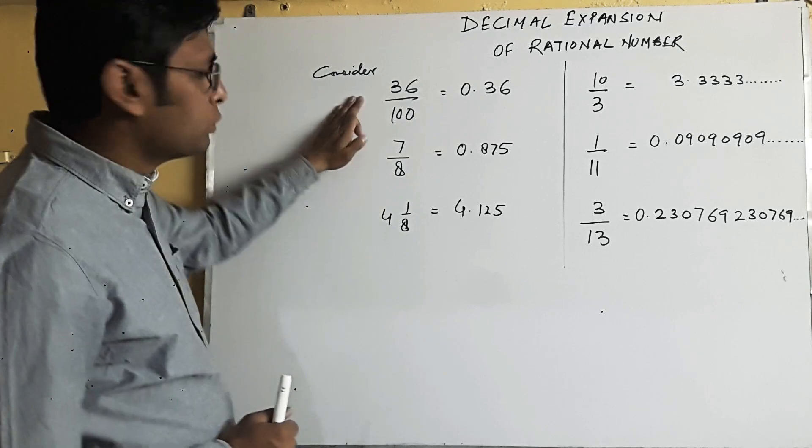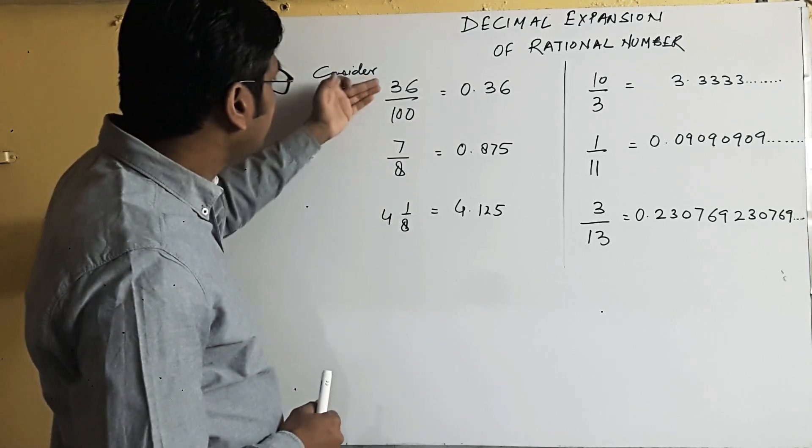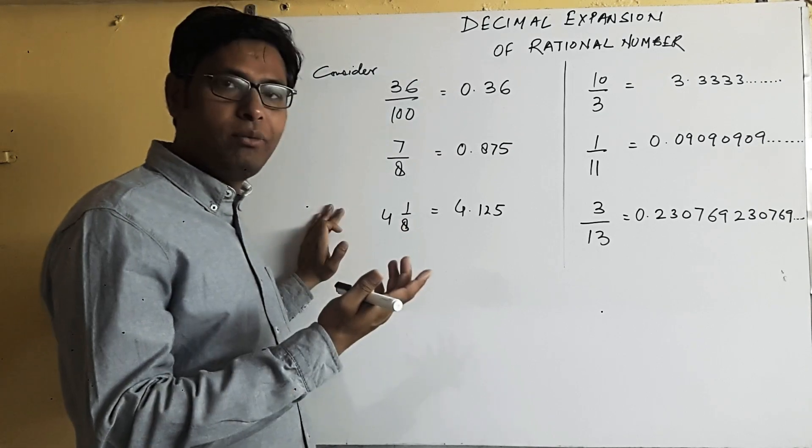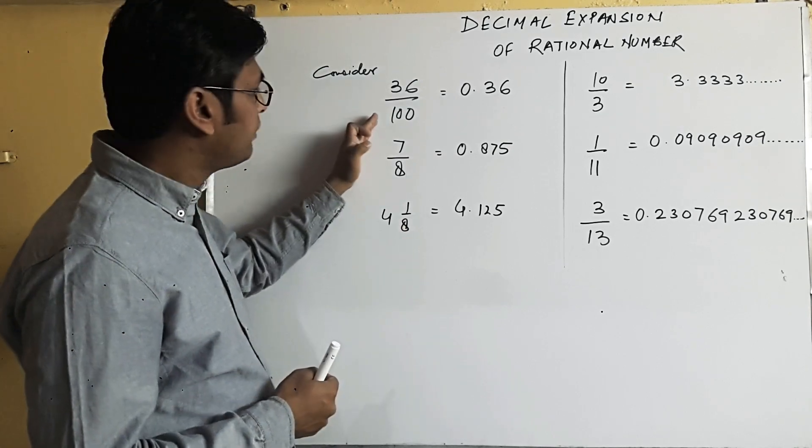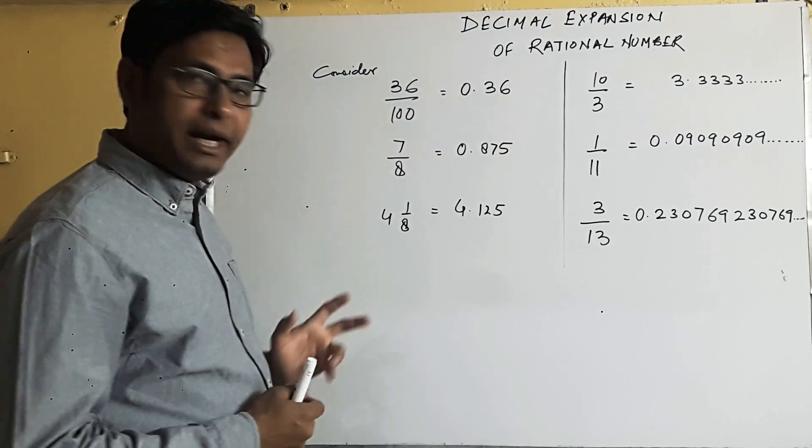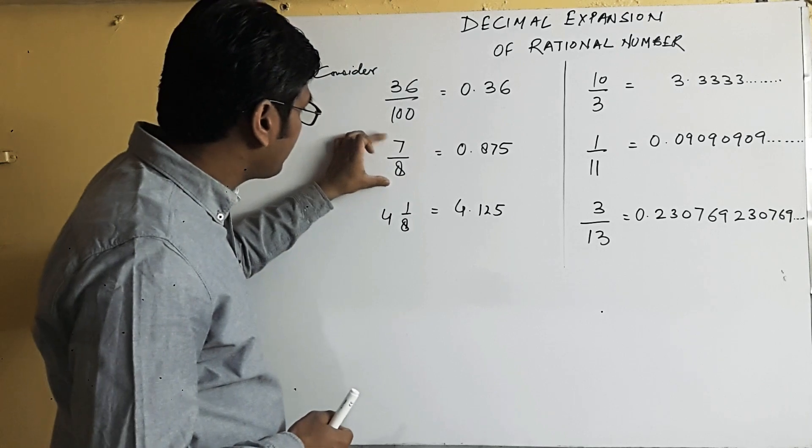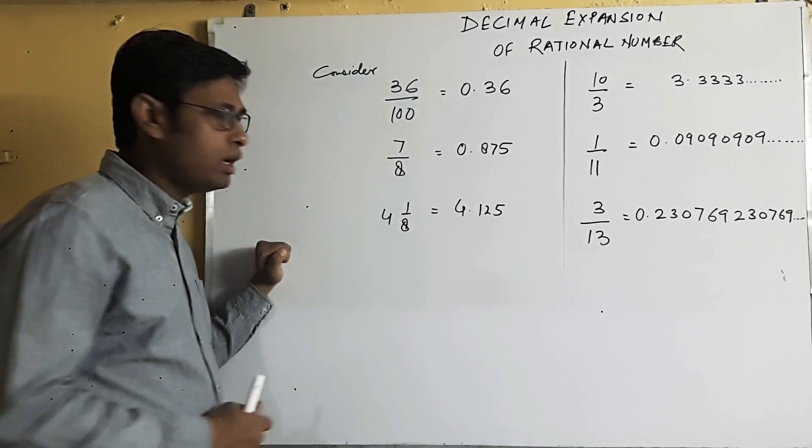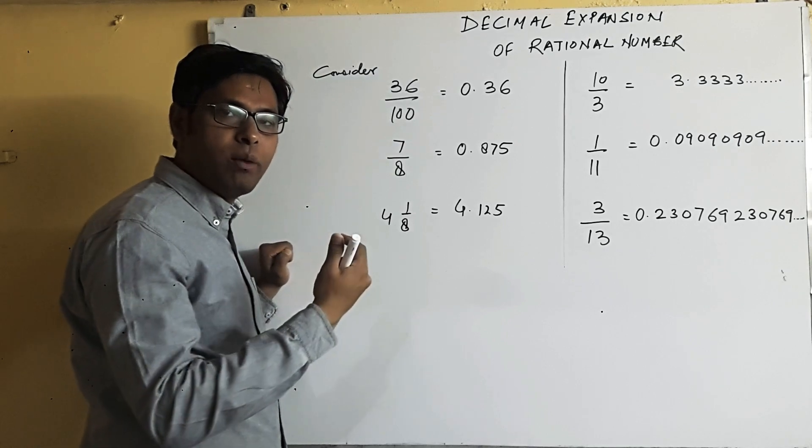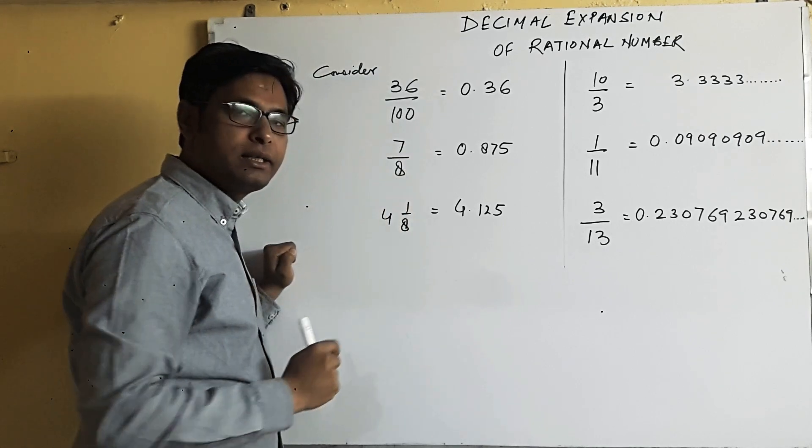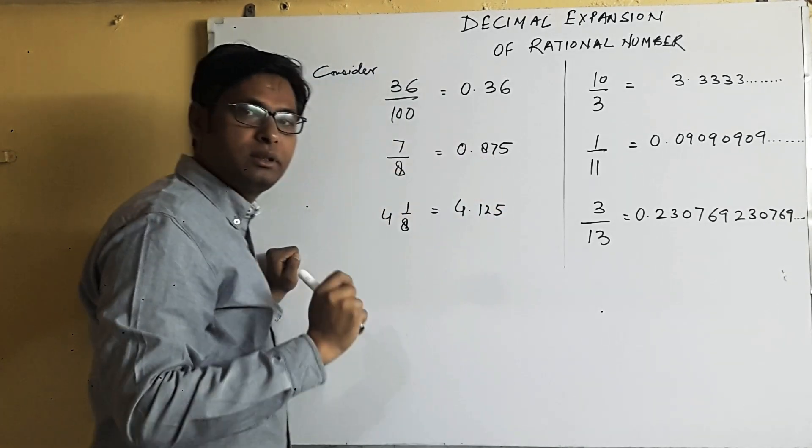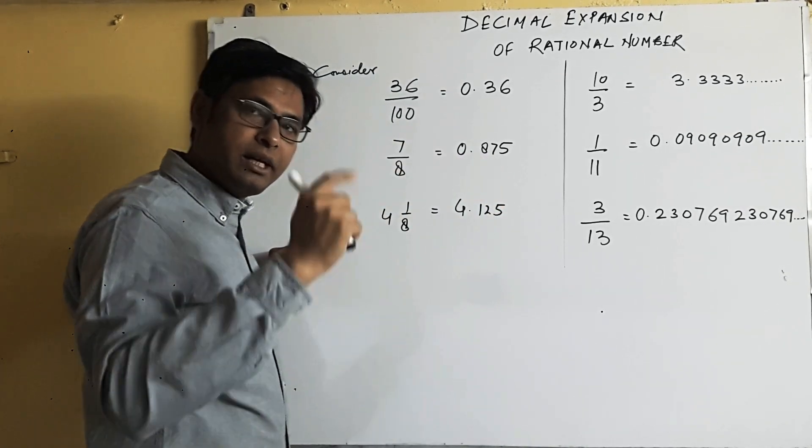If I ask you how to convert 36 upon 100 into decimal form, you can without solving it very easily write 0.36. After that, let's take this example, 7 upon 8. You will divide 7 by 8 and then you will get 0.875, and that's it. The remainder will come 0.